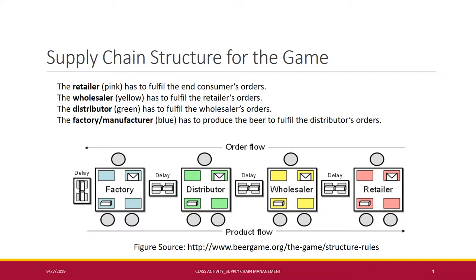The retailer, shown in pink, fulfills the end consumer's order. The wholesaler, in yellow, fulfills the retailer's order. The distributor, in green, fulfills the wholesaler's order. And the manufacturer, in blue, produces the beer to fulfill the distributor's order. In this flow, orders move mostly clockwise. Importantly, no one is allowed to share any information other than current order quantities — just as in real-world unmanaged or unlinked supply chains.